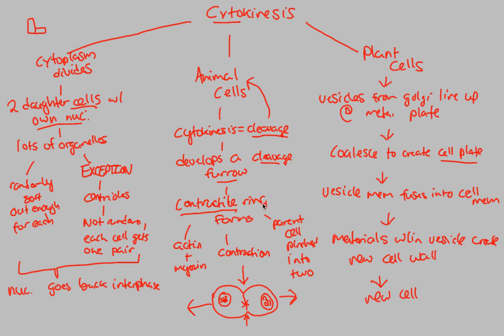Overall, we've now completed the cell cycle in its entirety. We went through interphase, through the M phase, through mitosis specifically, and now we've completed cytokinesis. We have a better understanding of the cell cycle and the complexities seen within it. We have one more flowchart to finish off this lecture, and it's called binary fission — we'll get into that next. Hopefully you have a better idea of how the cell cycle cycles over and over again, and how mitosis and cytokinesis are the final steps that help completely separate into two separate but identical cells.